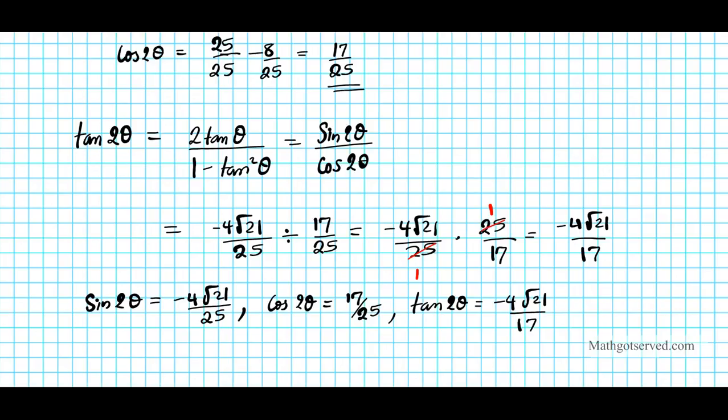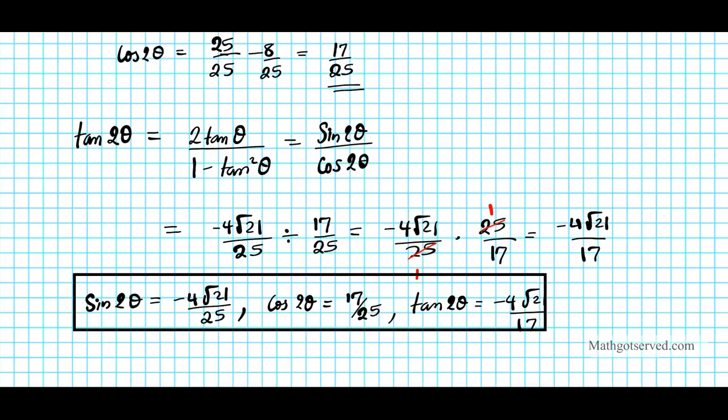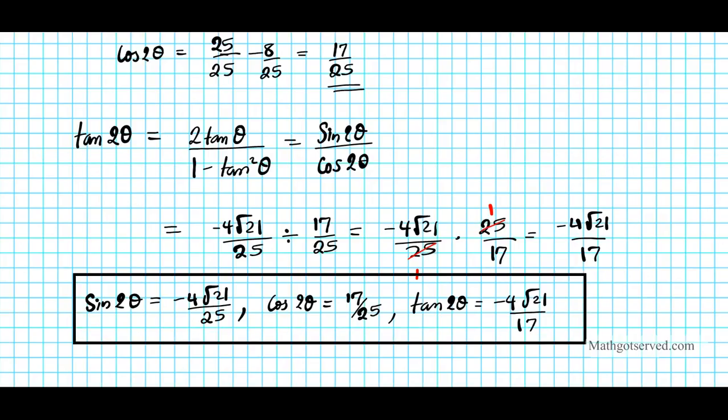So our three answers together: sine 2θ = −4√21/25, cosine 2θ = 17/25, and tan 2θ = −4√21/17.